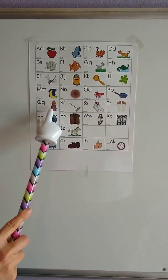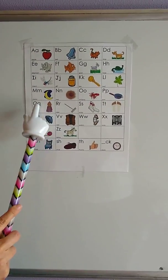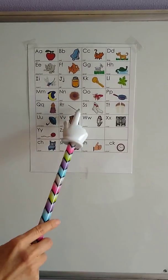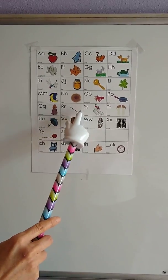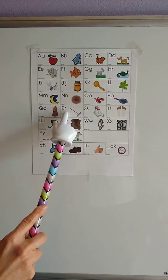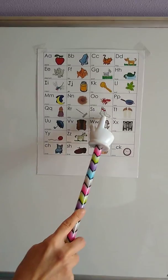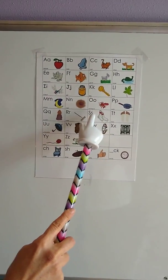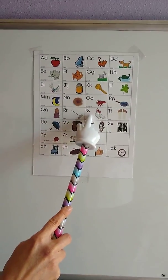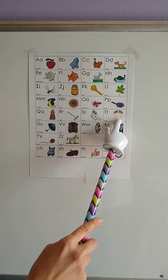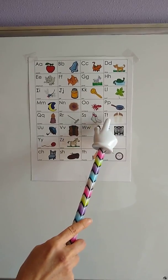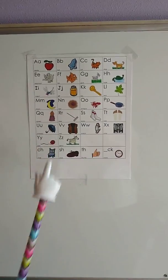Queen, queen, kw, kw, kw. Rake, rake, r, r, r. Sock, sock, s, s, s. Toes, toes, t, t, t.